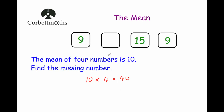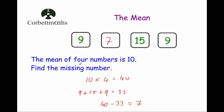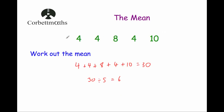Now we just need to work out what the missing number is. Let's add up 9, 15 and 9: 9 plus 15 is equal to 24, plus 9 is equal to 33. Then all we need to do is take that away from 40 — so 40 minus 33 is equal to 7. The missing number is 7. Let's test it: 9 plus 7 is 16, plus 15 is 31, plus 9 is 40, divided by 4 is 10. So to work out the mean, add up the numbers and divide by the number of numbers.